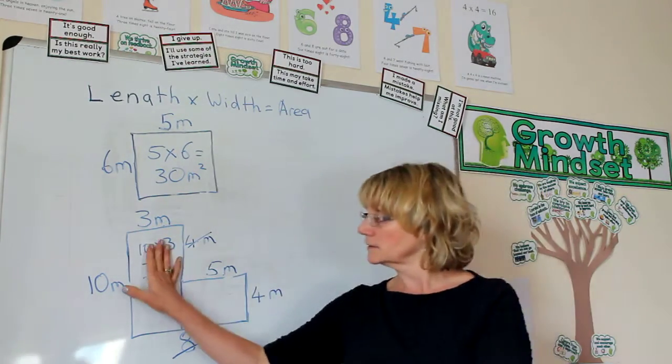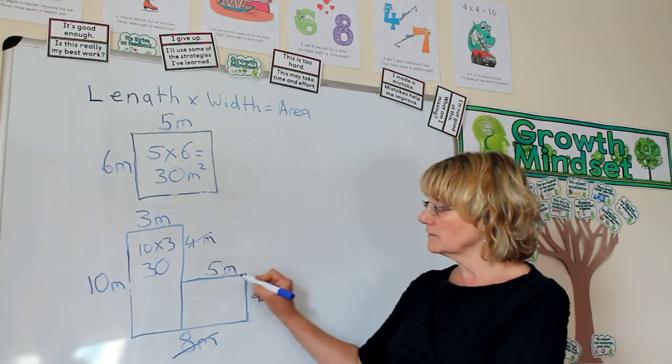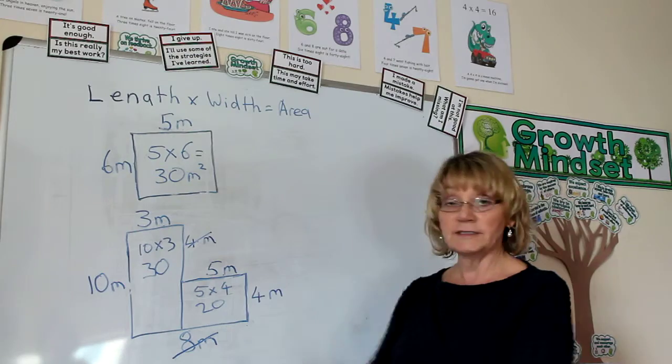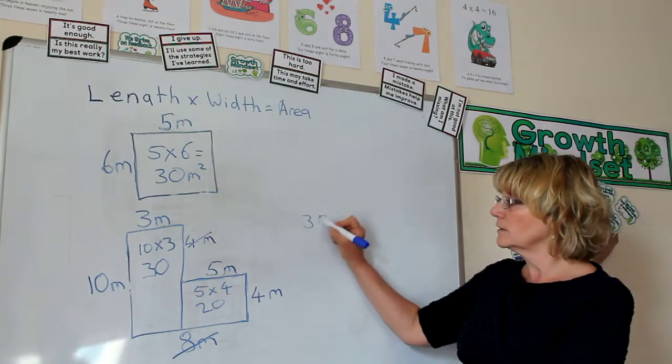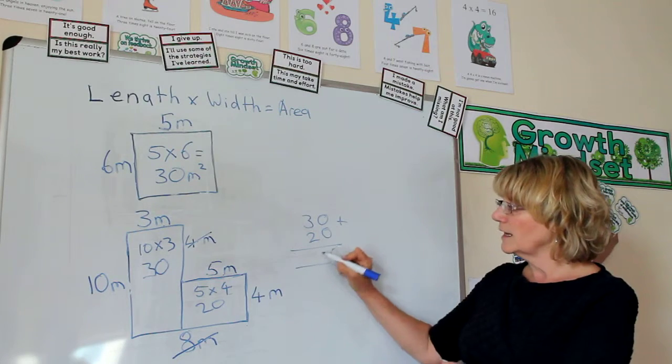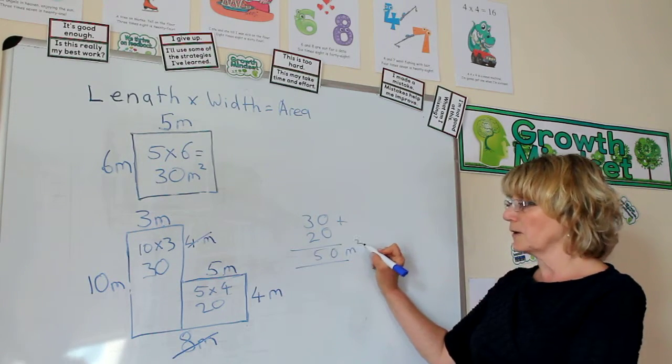And then we do the second rectangle. The length is 5 times 4, which is 20, and we simply add the two together. 30 plus 20—showing working is very important—and that's 50 metres squared. That's it.